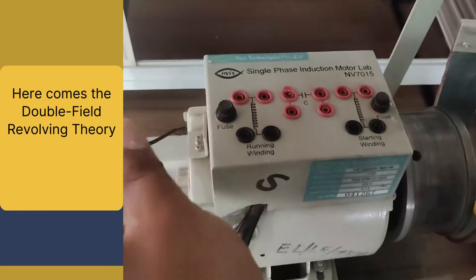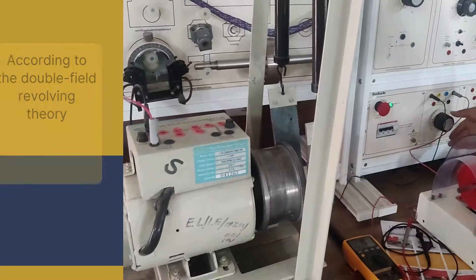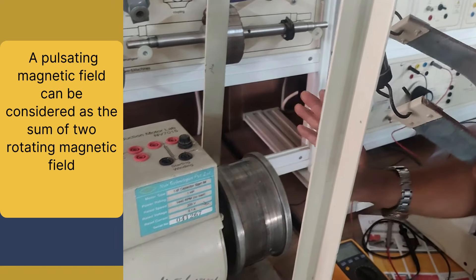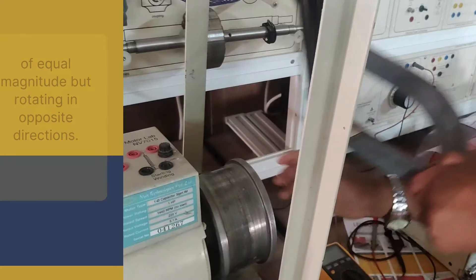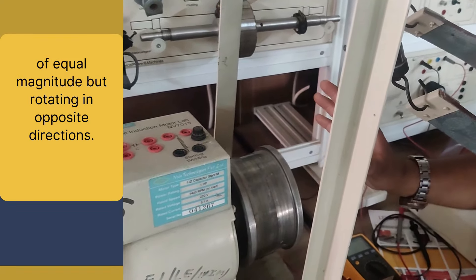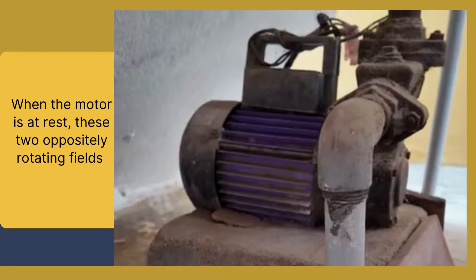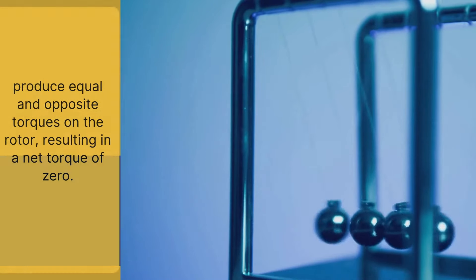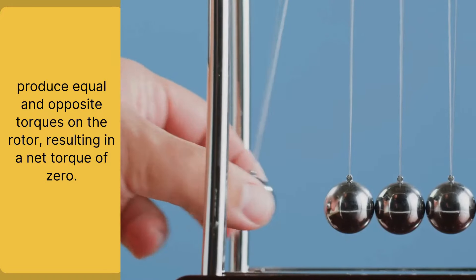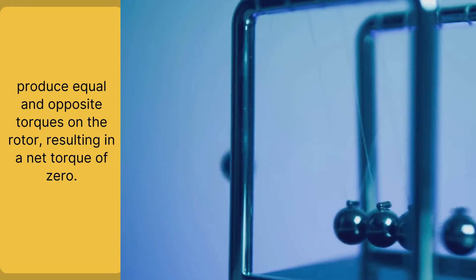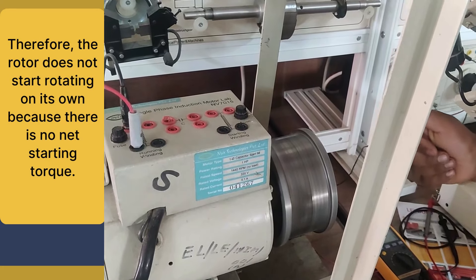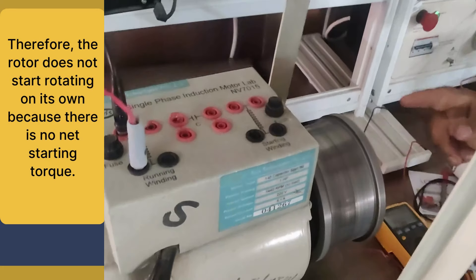Here comes the double field revolving theory. According to double field revolving theory, a pulsating magnetic field can be considered as the sum of two rotating magnetic fields of equal magnitude but rotating in opposite directions. When the motor is at rest, these two opposite rotating magnetic fields produce equal and opposite torques on the rotor, resulting in a net torque of zero. So the motor does not start. Therefore, the rotor does not start rotating on its own because there is no starting torque.